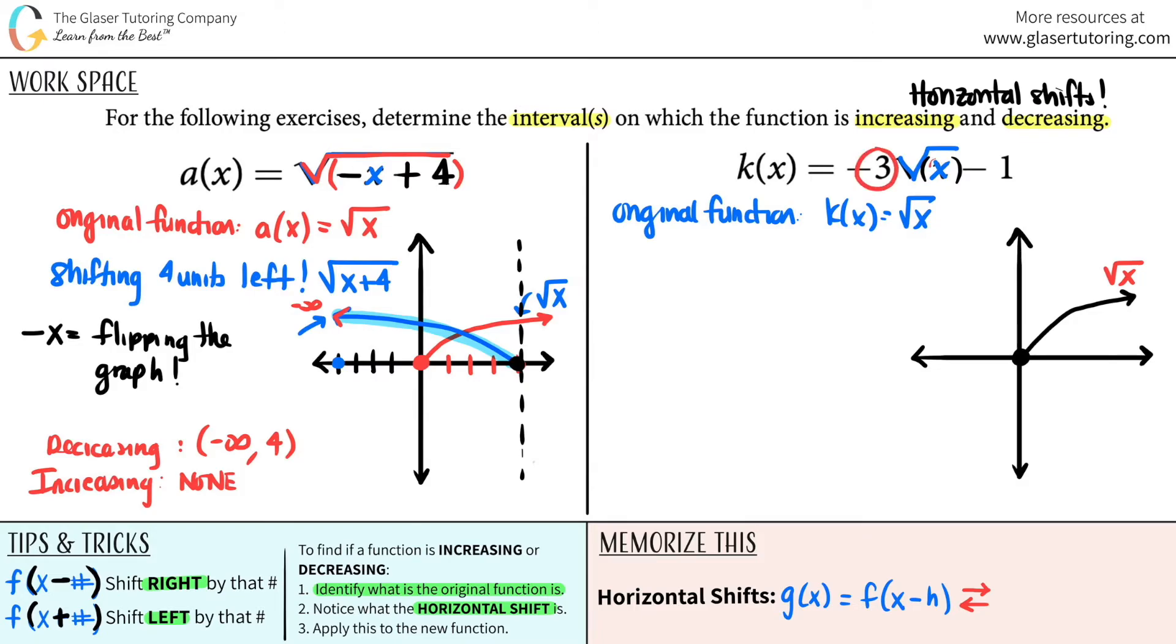This three isn't part of this x inside of the square root. So there's no horizontal shifts. Okay, so I'm still going to keep it as my first graph. All right.